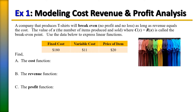We're asked to find the cost function C(x), the revenue function R(x), and the profit function P(x). To find the cost function, the variable cost is $11, so that's 11x, where x is the number sold, plus the fixed cost. So the cost function is C(x) = 11x + 180.